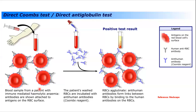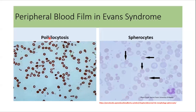In patients with Evans syndrome, RBCs are coated with antibodies. When anti-human antibodies are added, there will be RBC agglutination, leading to a positive direct Coombs test. A strongly positive direct Coombs test is a very important test for the diagnosis of warm autoimmune hemolytic anemia, which is part of Evans syndrome. In the blood film, we can also see poikilocytosis — RBCs of various shapes — as well as spherocytes.